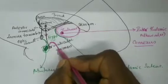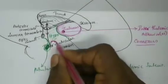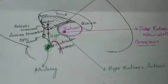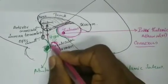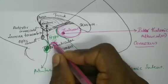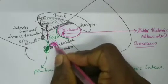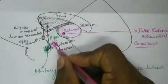From here we have the cerebral peduncle, which forms the midbrain. This is the cerebral peduncle which will be continuing downward.